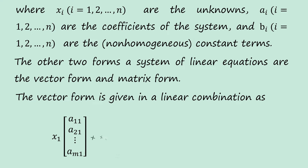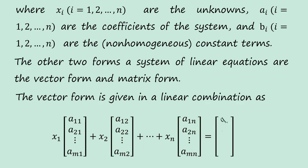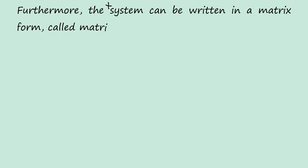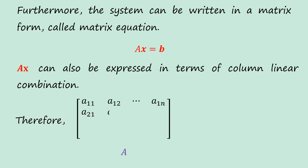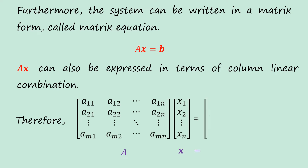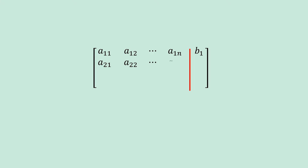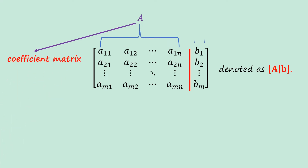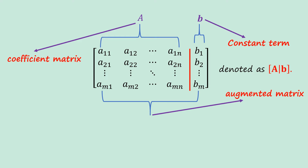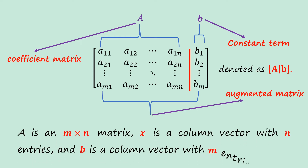The other two forms of a system of linear equations are the vector form and the matrix form. The vector form is given as a linear combination. Furthermore, the system can be written in matrix form called a matrix equation, given as Ax equals B. Ax can also be expressed in terms of a column linear combination, where A is a matrix, X is a column vector, and B is a column vector. The matrix A and B can be written together with a dividing line — A is called the coefficient matrix, B is called the constant term, and their combination is called the augmented matrix. A is an m-by-n matrix, X is a column vector with n entries, and B is a column vector with m entries.